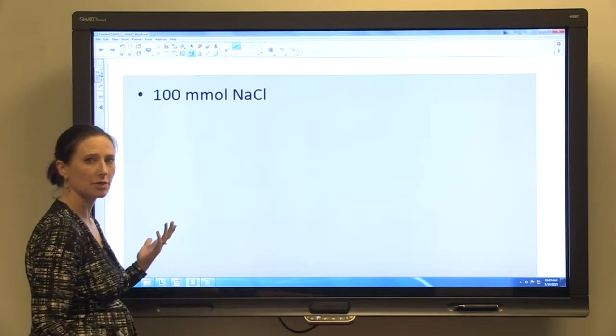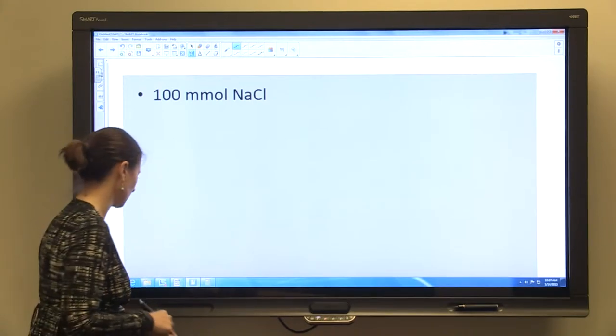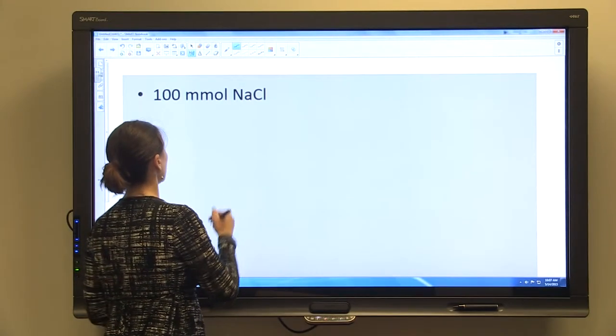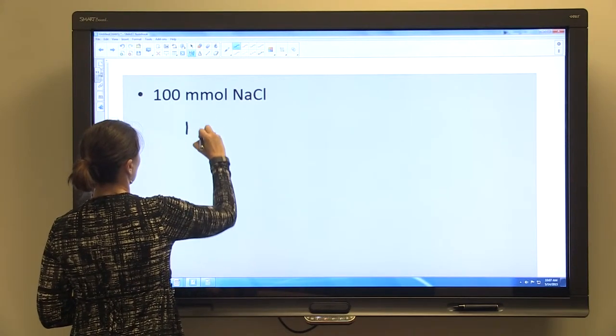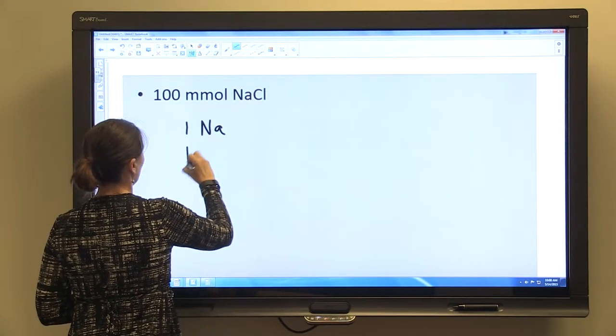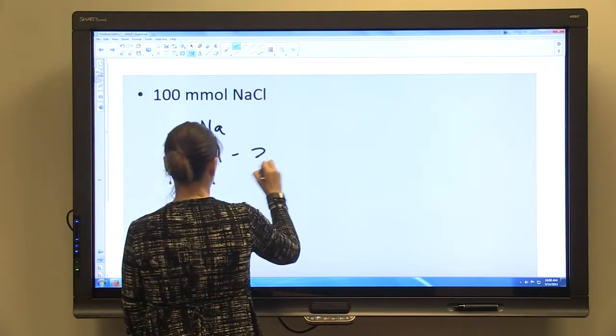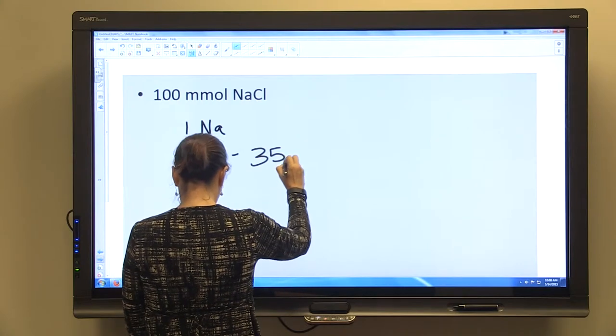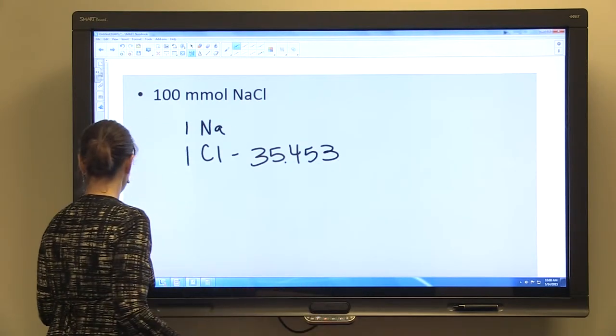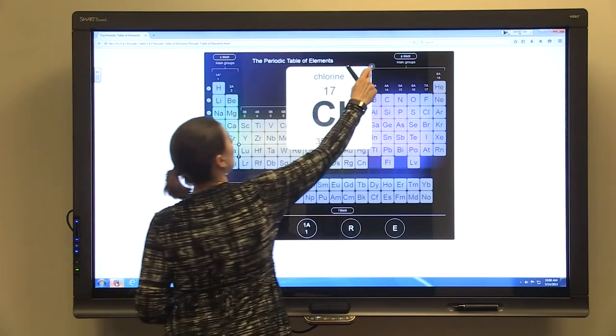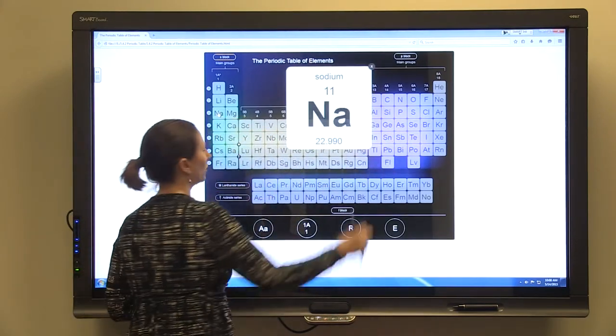Let's do another example. This one's a little more complicated because we're not talking about just one mole, but 100 millimolar sodium chloride. There's one sodium and one chlorine. Chlorine we just looked at, it was 35.453. We'll look up our sodium: 22.990.